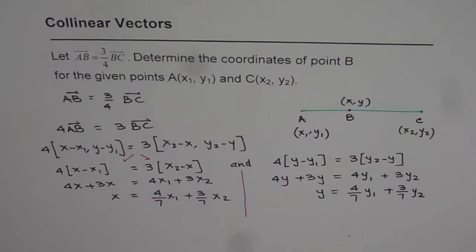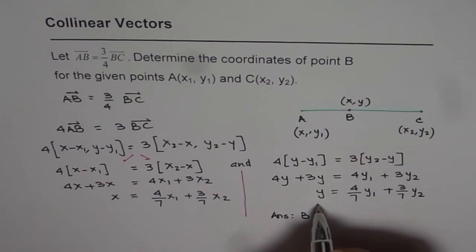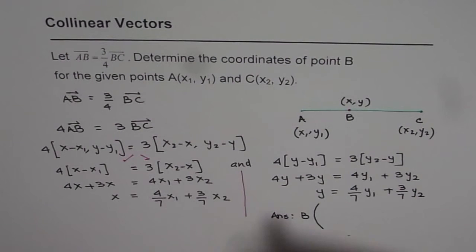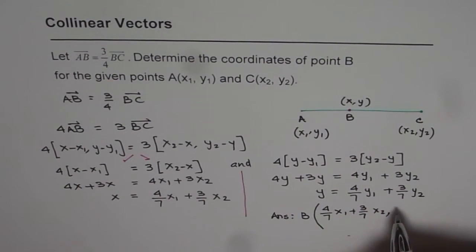That is the way to get the coordinate points. The answer therefore is: the coordinates for point B are 4 over 7 times x₁ plus 3 over 7 times x₂ for the x coordinate, and 4 over 7 times y₁ plus 3 over 7 times y₂ for the y coordinate.